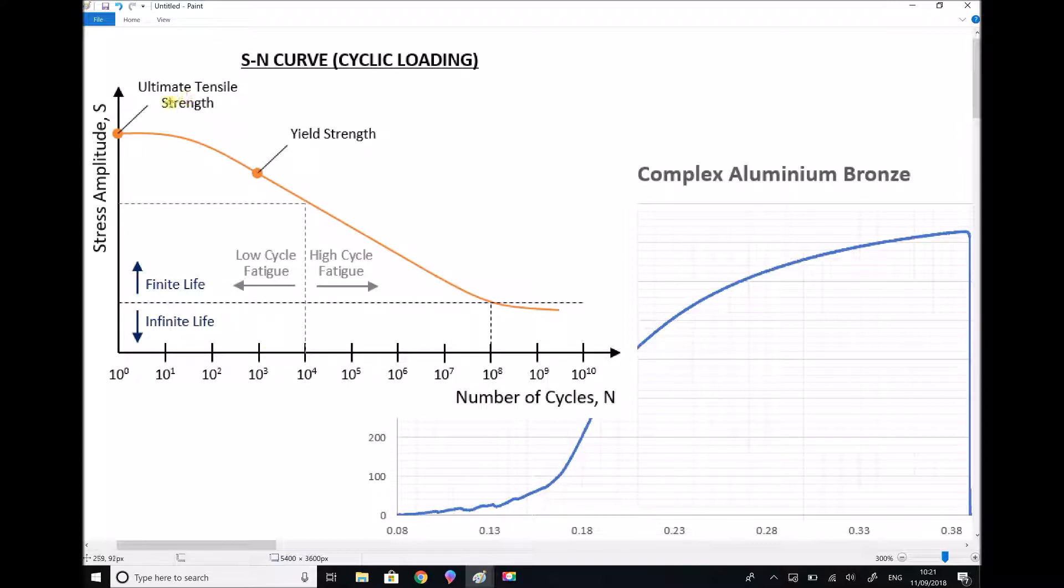Now what we see labeled on here is our ultimate tensile strength and if we refer to our stress strain graph for complex aluminum bronze that's the stress value up here where the material fails. In this case it's just over 700 MPa.